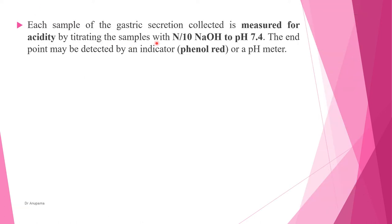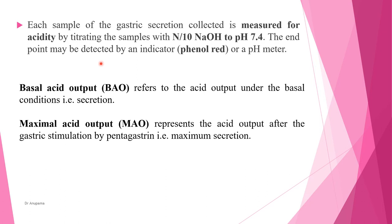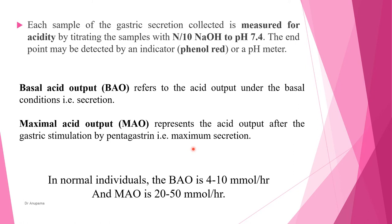Each sample of gastric secretion is measured for acidity by titrating with 0.1 normal NaOH at pH 7.4, with the endpoint detected by the indicator phenol red or by a pH meter. Basal acid output (BAO) refers to acid output under basal conditions, while maximal acid output (MAO) represents acid output after gastric stimulation by pentagastrin. In normal individuals, basal acid output is around 4 to 10 millimoles per hour.